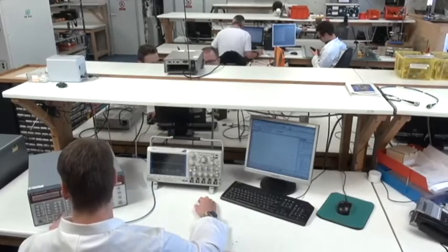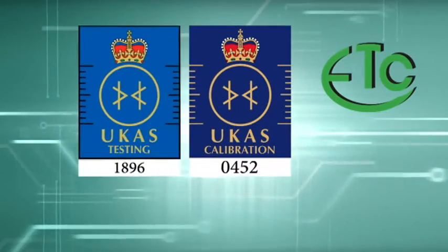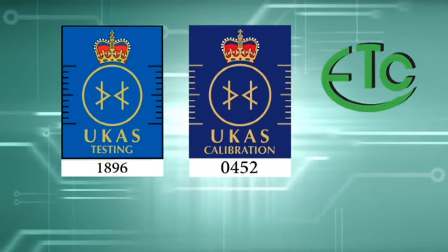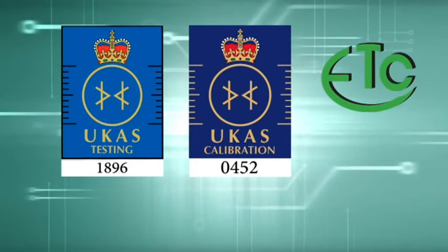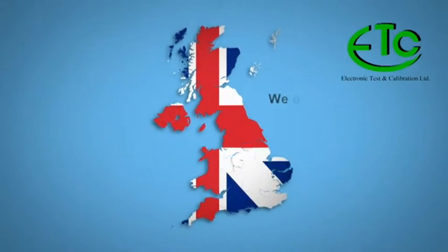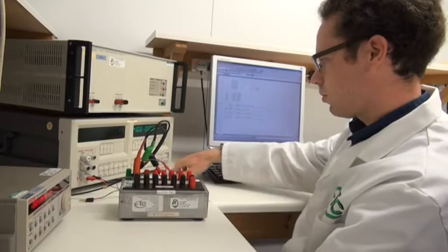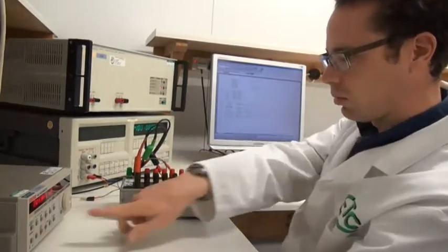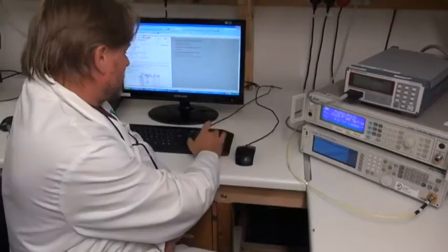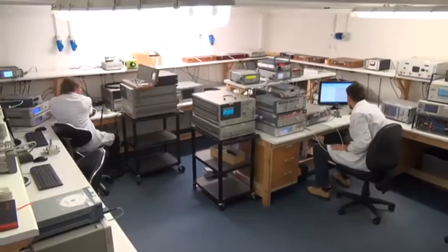ETC Limited was formed in 1992 and is a UKAS 17025 accredited EMC calibration and testing laboratory. We operate a nationwide delivery and collection service calibrating all kinds of electronic equipment ranging from DC and LF equipment, RF and microwave up to 40 gigahertz, and high voltage, temperature, torque, and force equipment.